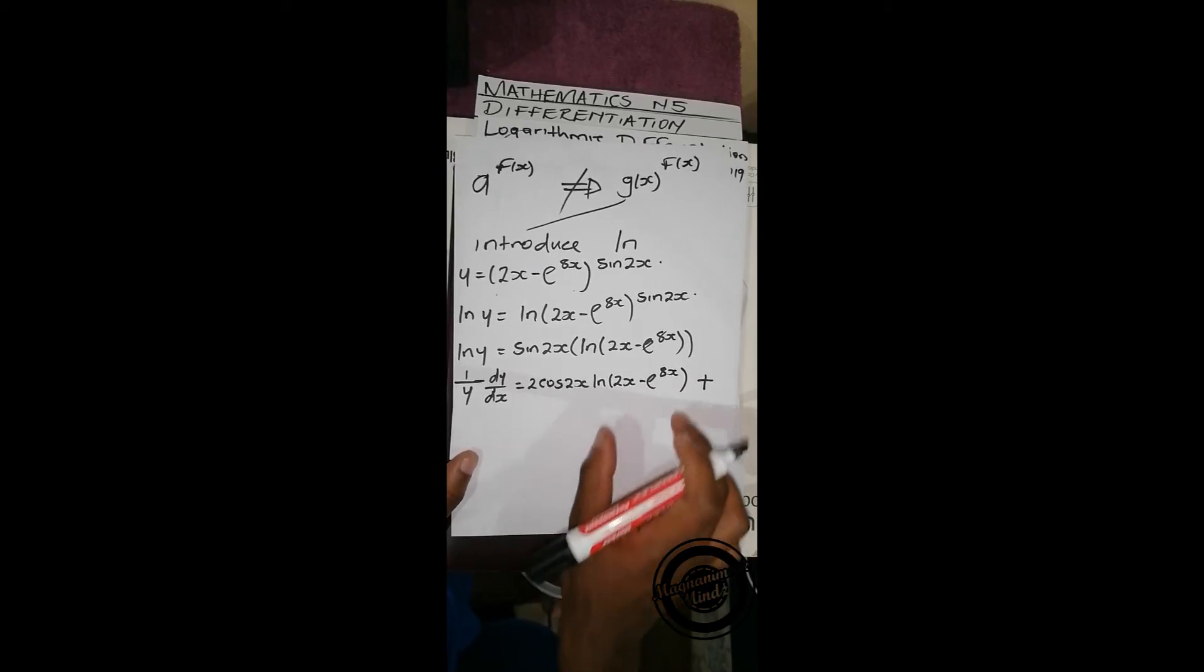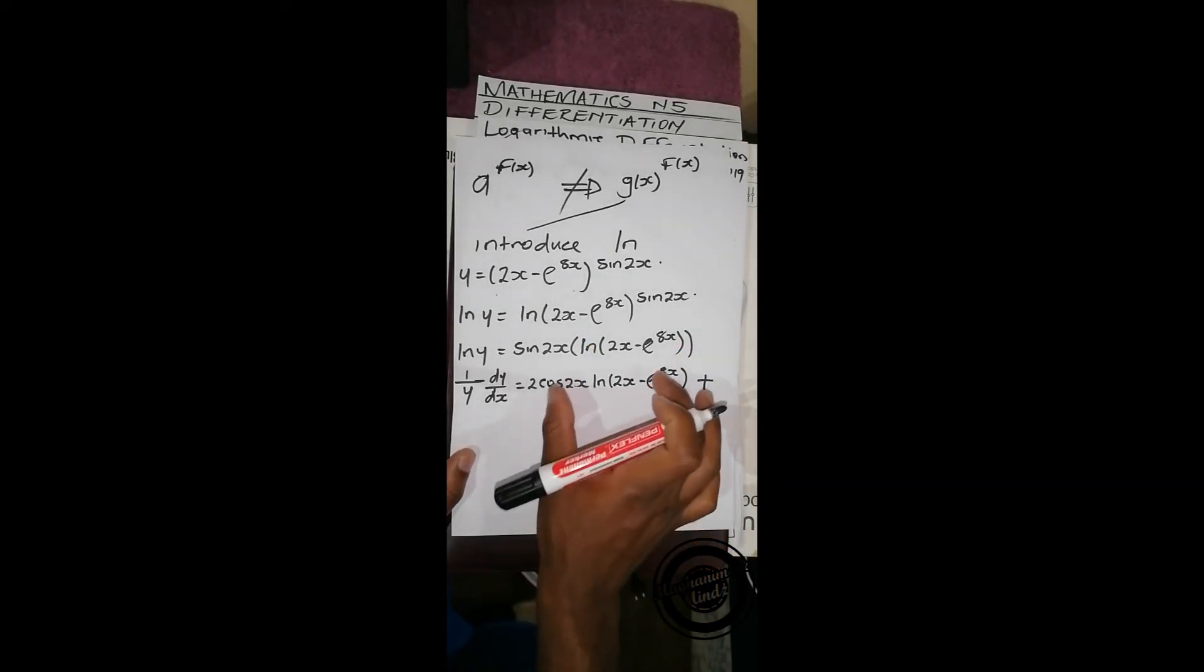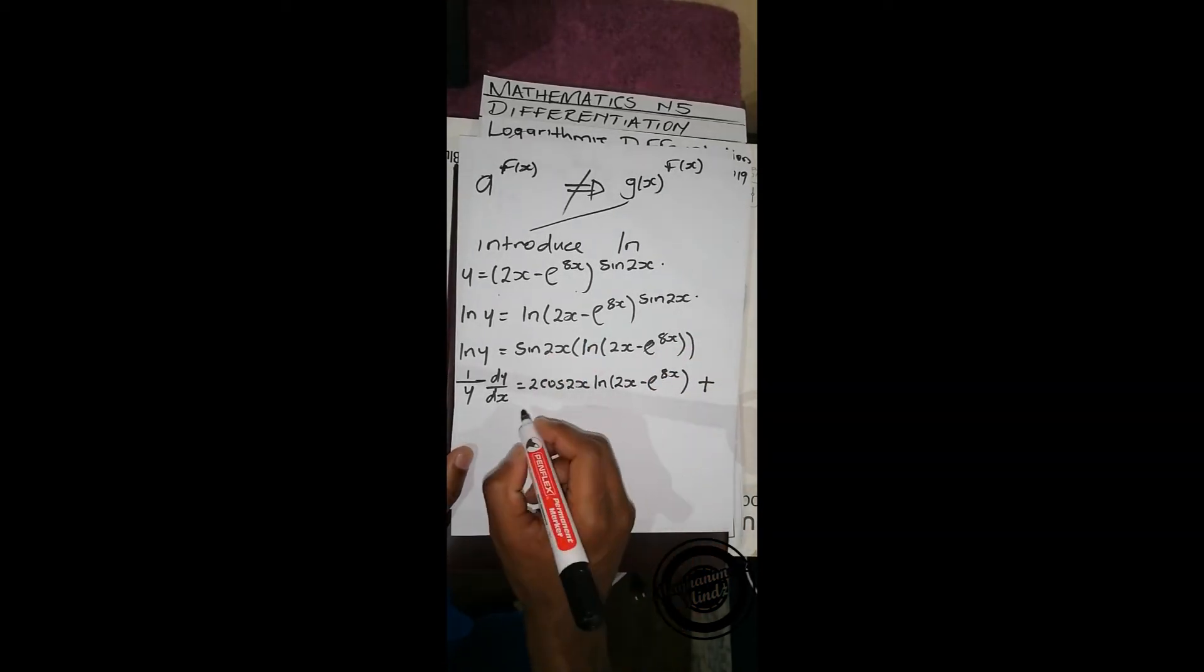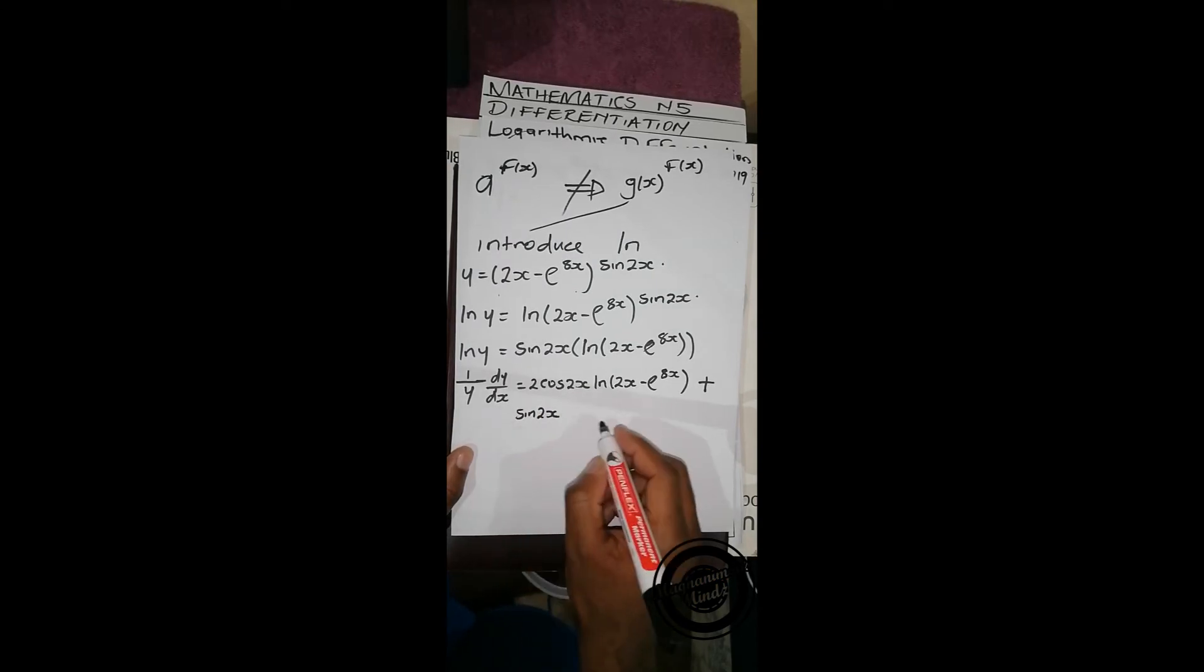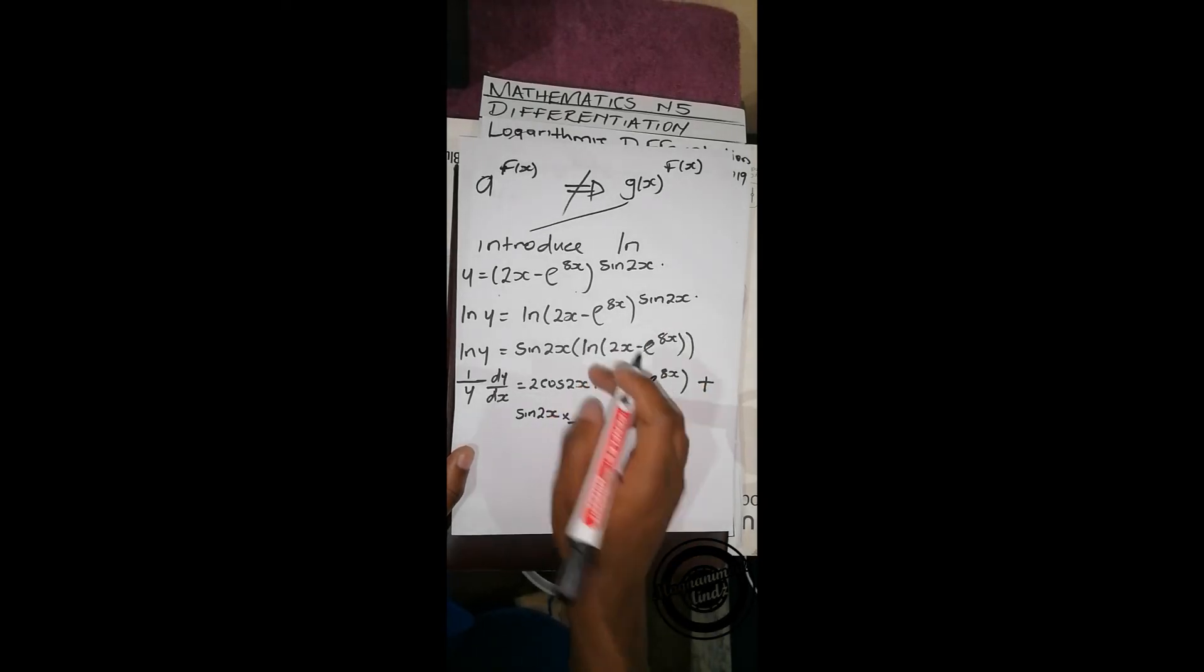and then now we differentiate this one, since we are using product rule here. Then we'll get sin 2x times 1 over, then we're differentiating this ln,